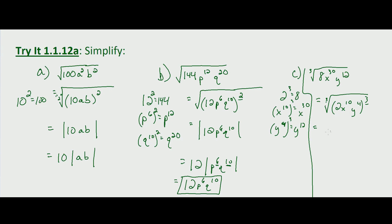So the cube root of 8x³⁰y¹² equals 2x to the 10th y to the 4th, because if we cube that we get exactly what we originally had under the cube root radical.